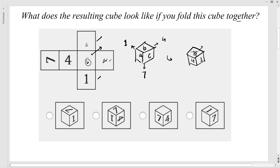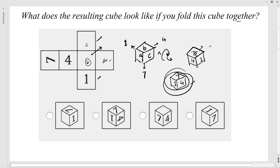B is simply a blank space, so we don't have any marking there. Now if you put it upside down and turn it, you will get 7 on top, 4 here, and 1 here. So this will be the right answer.